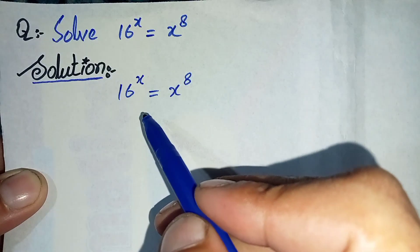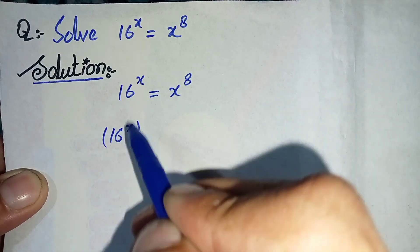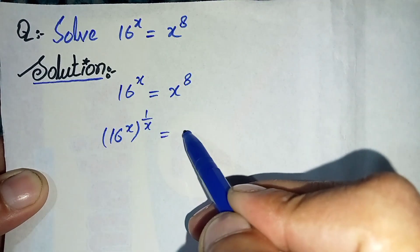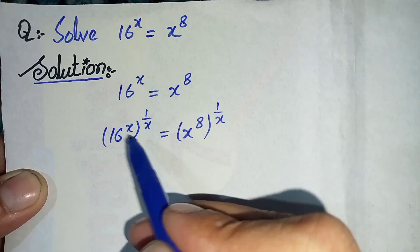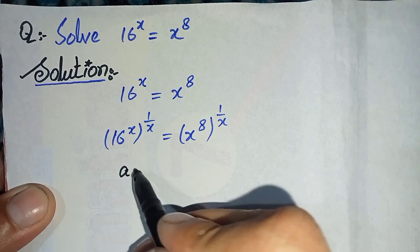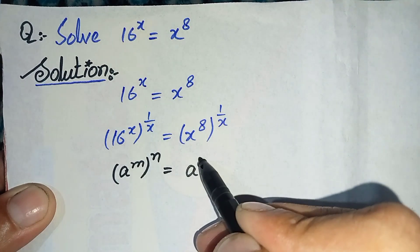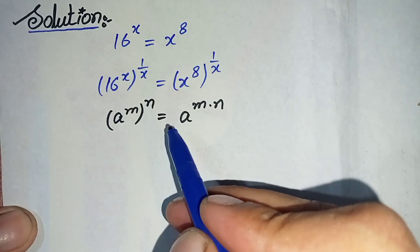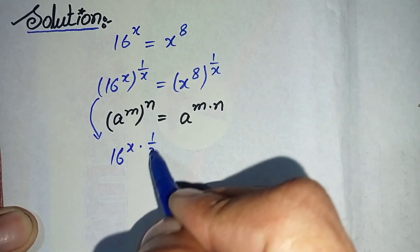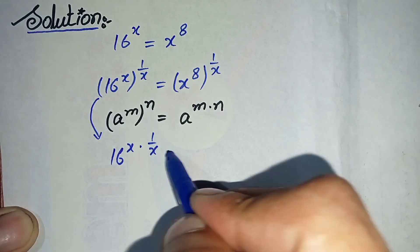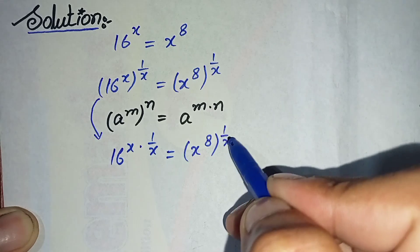To solve this further, first we will eliminate x from the left-hand side. We will take 1 over x as a power on both sides, so it becomes 16 power x, whole power 1 over x, is equal to x raised to power 8, whole power 1 over x. Here we will use the exponential formula: a raised to power m, whole raised to power n, is equal to a raised to power m multiplied by n.